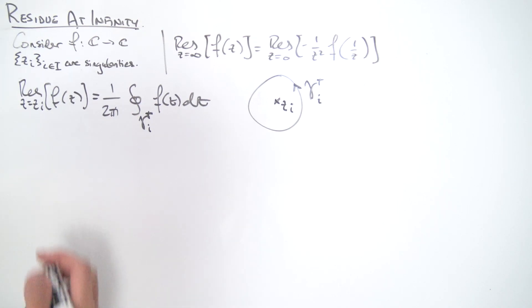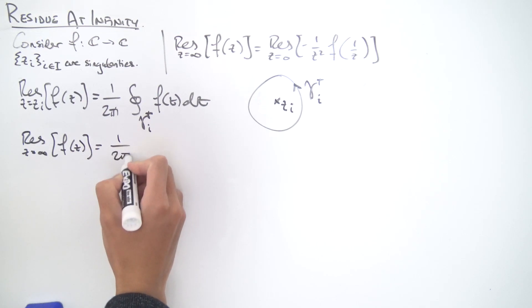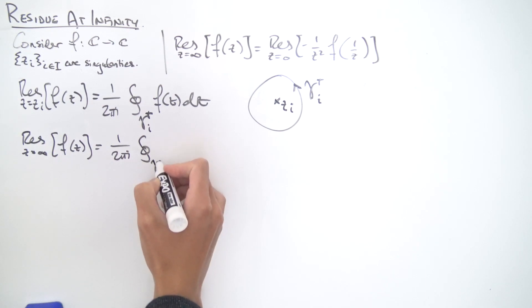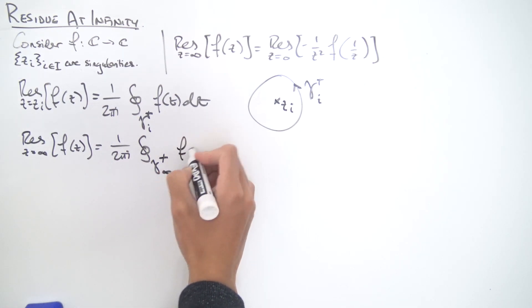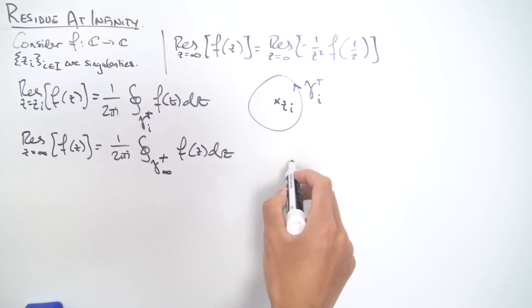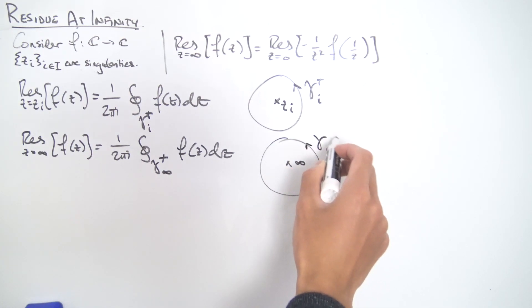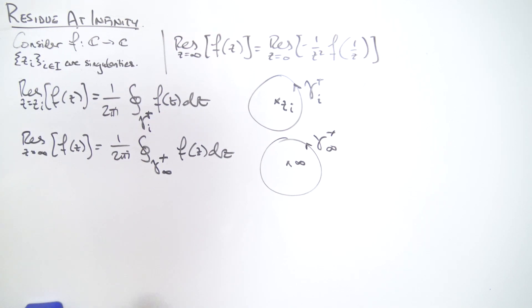Now let's apply this same definition to the residue at infinity. The residue at z equals infinity of f(z) is equal to one over two pi i times the contour integral over some contour gamma_infinity, traversed in the positive direction, of f(z) dz. This is a little weird to think about because we'd have to imagine infinity as some kind of point. To make sense of this, we need to look at something called the Riemann sphere, which is a compactification of the complex plane that introduces the point at infinity.